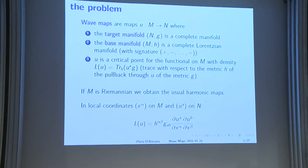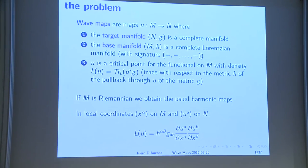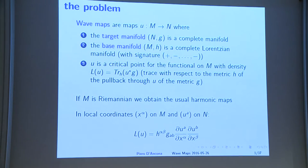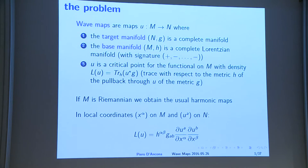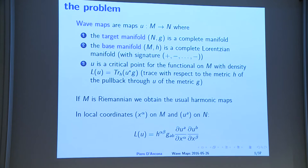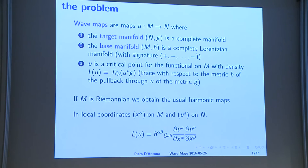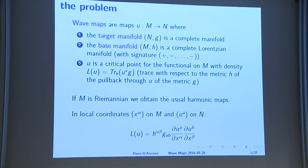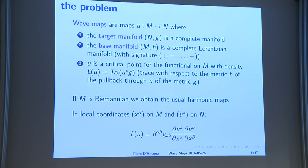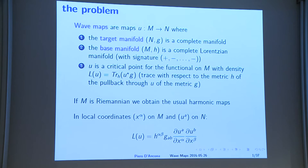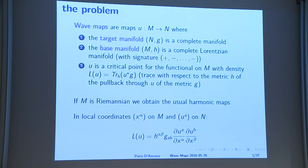Let me recall for maybe less than half of the audience what is the problem of wave maps. The general definition — this is not even the most general possible, because in some cases one could consider even more general targets, but essentially the most general. We consider maps between two manifolds. The target manifold is a Riemannian manifold, while the base manifold is a complete Lorentzian manifold, so the signature is hyperbolic.